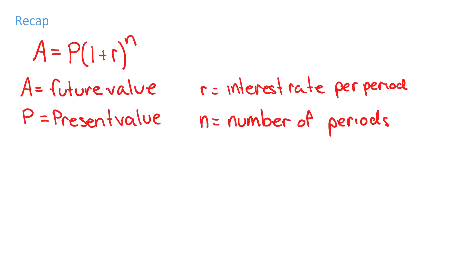To recap: the main formula is A equals P times one plus r to the power of n, where A is future value, P is present value, r is interest rate per period, and n is the number of periods. Make sure r and n use the same time unit — if you're dealing with months, both have to be in months; if years, both have to be in years.